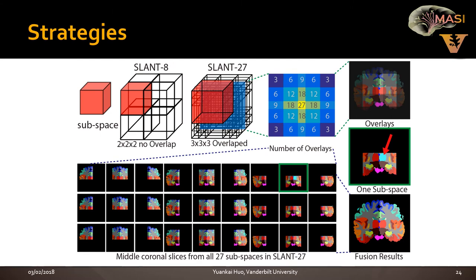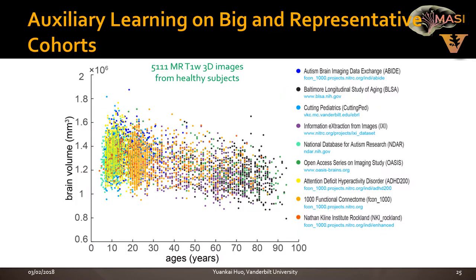Using SLANT, we can fully take advantage of traditional medical image processing methods like registration, bias correction, and label fusion. Each network is only responsible for one particular spatial region. We tried SLANT-8 (2×2×2 non-overlap strategy) and SLANT-27 (3×3×3 overlapping strategy). After getting overlapping outputs, we apply label fusion to produce the final results, ignoring background voxels.